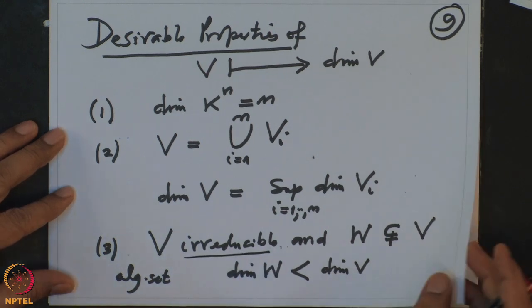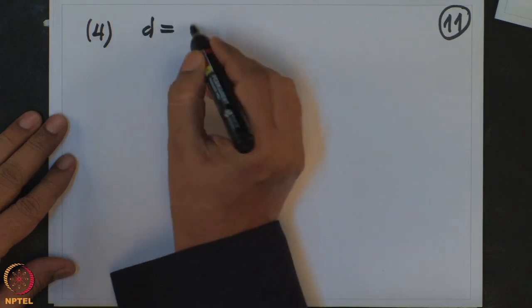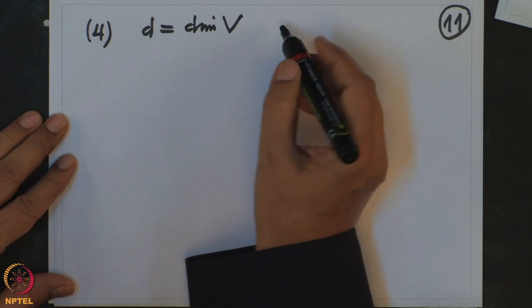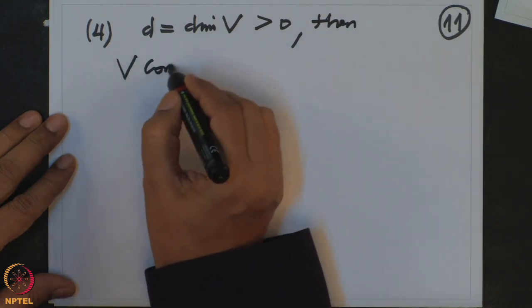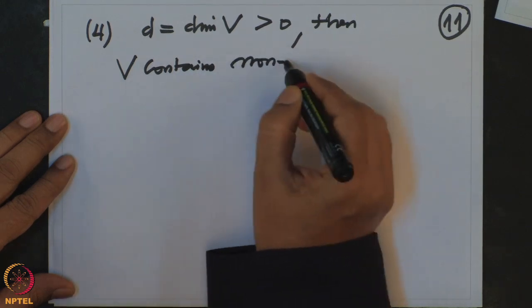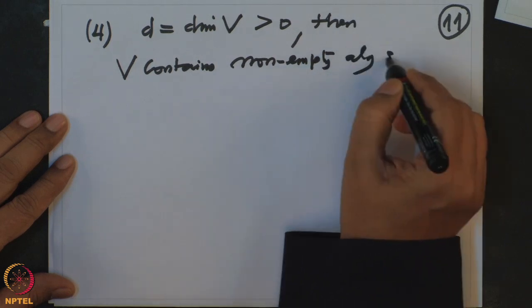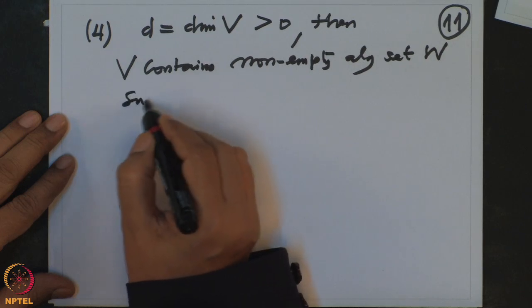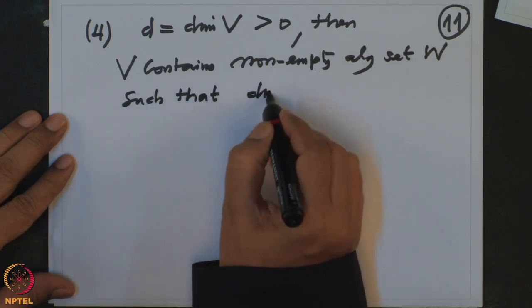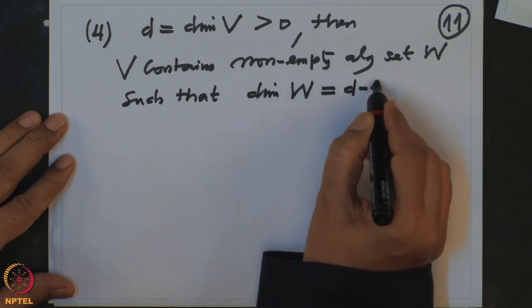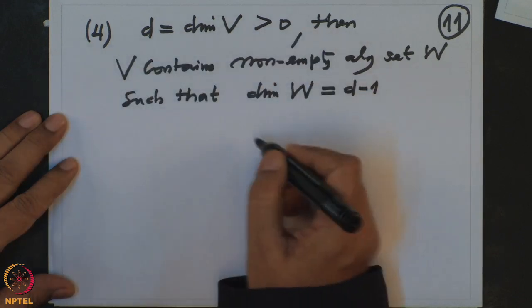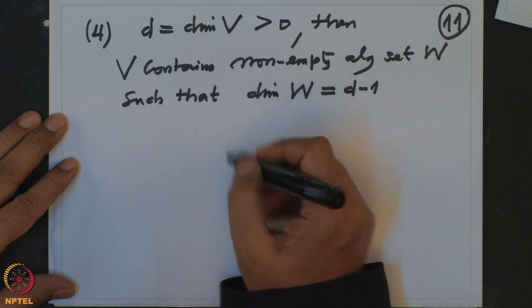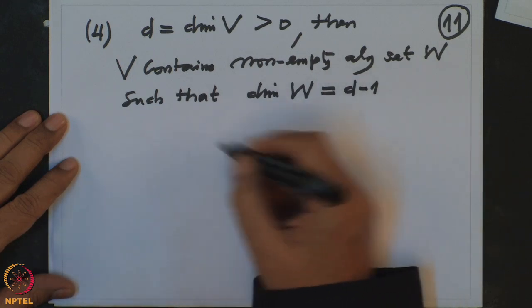Property 3: if V is irreducible and W is a proper algebraic subset (sub-variety), then dim(W) should be strictly less than dim(V). Property 4: if D = dim(V) is positive, then V contains a non-empty algebraic subset W such that dim(W) = D − 1, i.e., the dimension drops by exactly 1. This is based on the fact that every curve has points, every surface has curves on it, and so on.